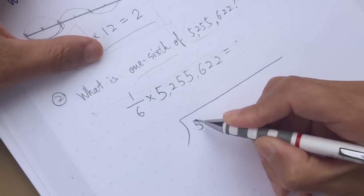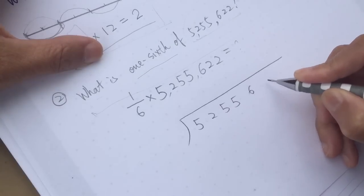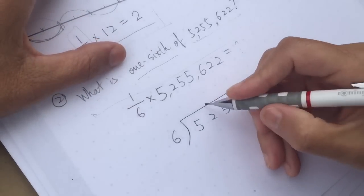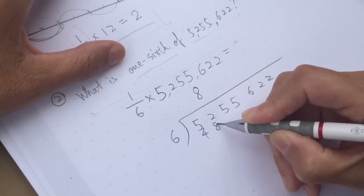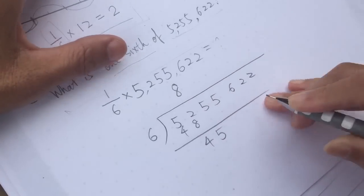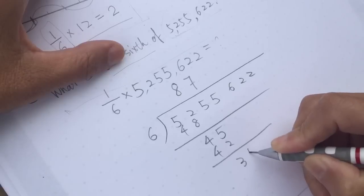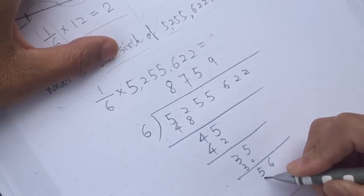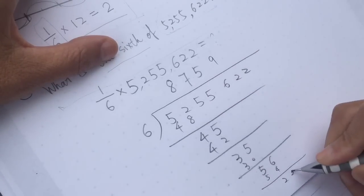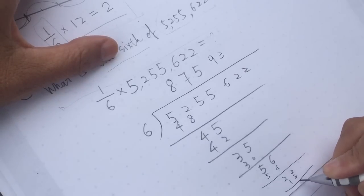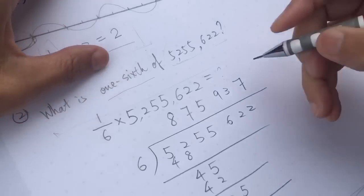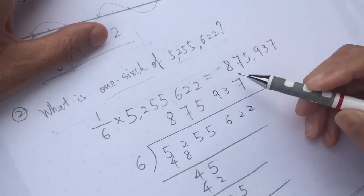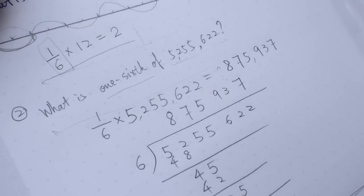We will transfer it into a division computation. The result is 8,875,937 — that is eight hundred seventy-five thousand nine hundred thirty-seven. That is the result.